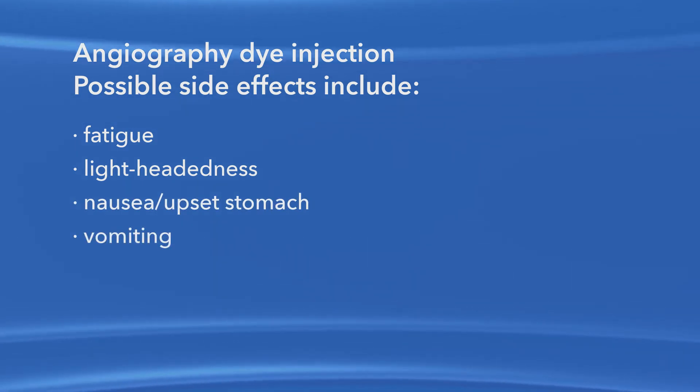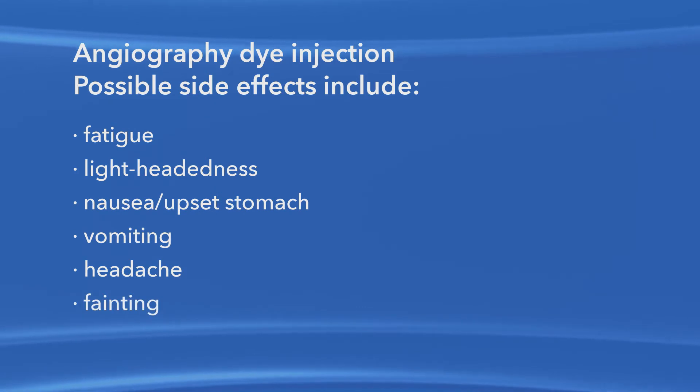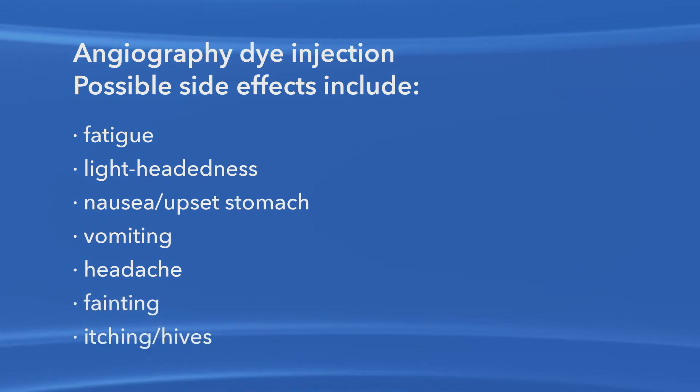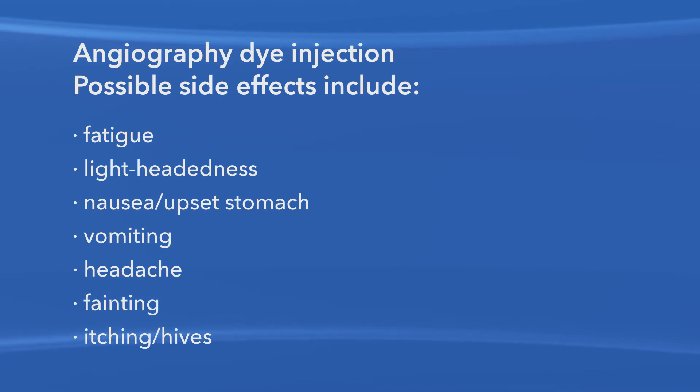Also possible are vomiting, headache, fainting, itching, or hives. Alert your ophthalmologist if you experience any of these side effects. Rarely, people may have an allergic reaction to fluorescein dye such as a skin rash or itchy skin. Severe reactions are very uncommon but could include trouble breathing. This rare occurrence would be treated with antihistamine drugs as needed. Be sure to tell your ophthalmologist if you have asthma or breathing problems.